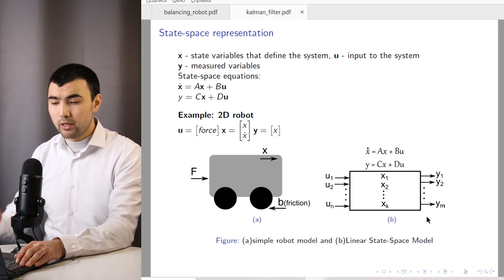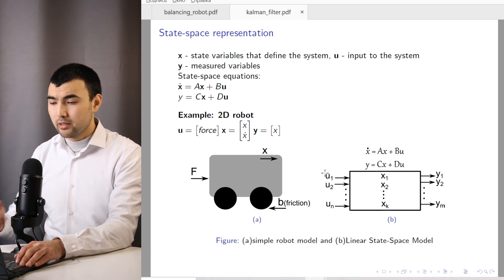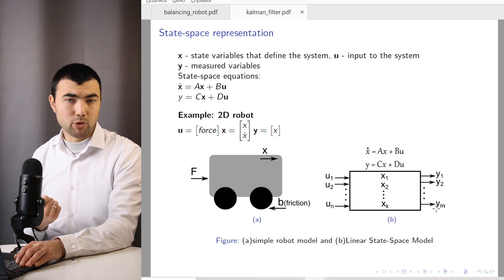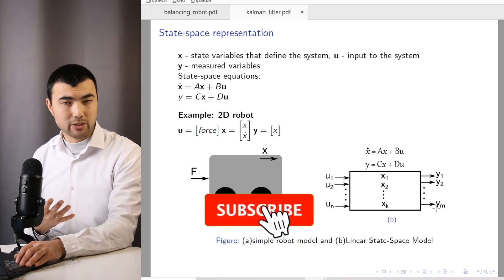If we have a quadcopter, the inputs to the system would be the voltage applied to all motors. The measured variables would be acceleration, the gyroscope values, magnetometer measurements, and the GPS, for example.